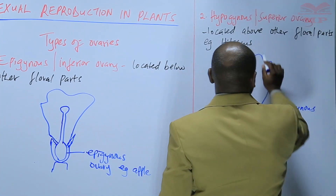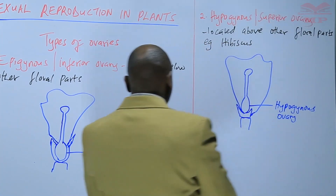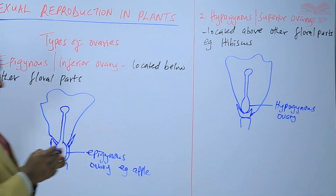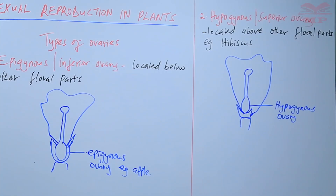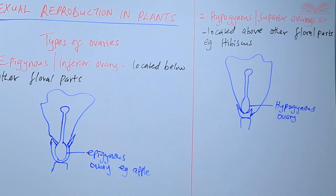For example, the hypogynous ovary is commonly found in the hibiscus plant. We also have another example — that's number three.